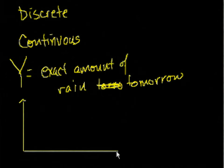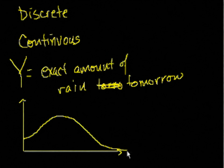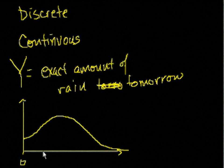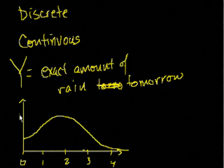Let me draw it like this. Let's say it looks something like this. The x-axis here is the amount of rain, where this is 0 inches, this is 1 inch, this is 2 inches, this is 3 inches, 4 inches. And this is some height — let's say it peaks out at about 0.5.